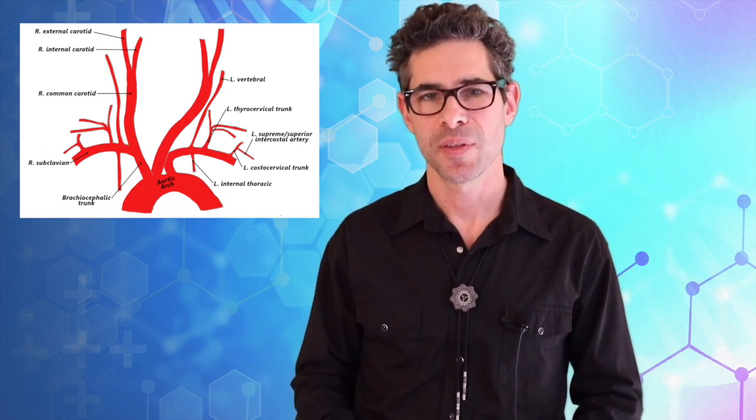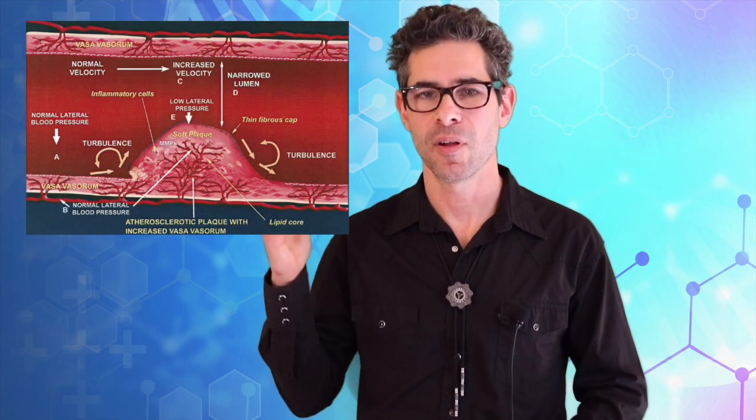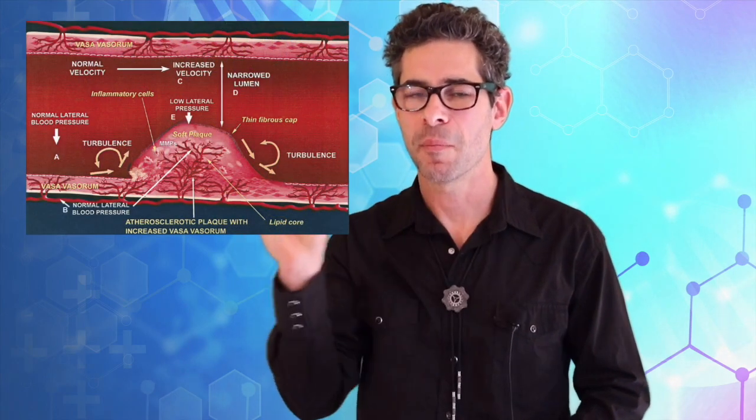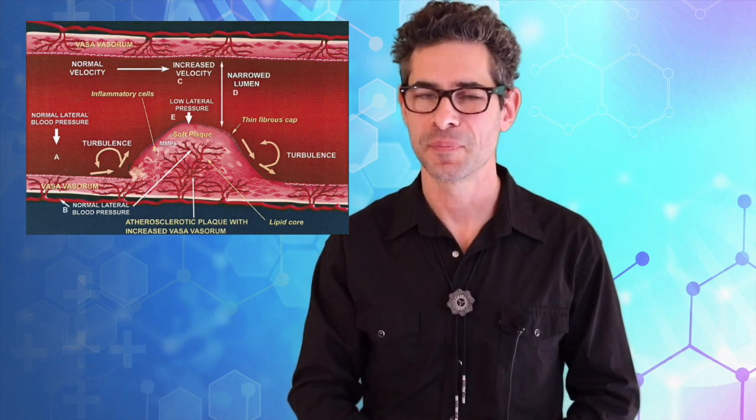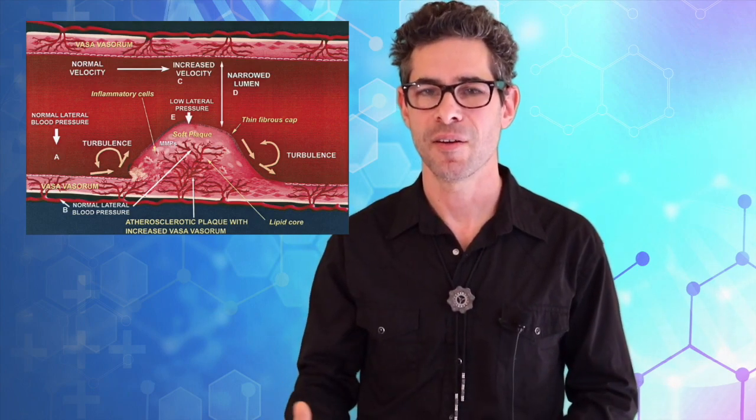And the reason for this is because these are places where the blood flow becomes turbulent. It can swirl around, creates little eddies. Instead of all going forward, it can actually come around backward and make a little whirlpool. And it abrades the artery.